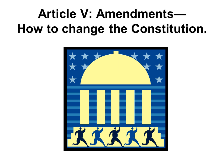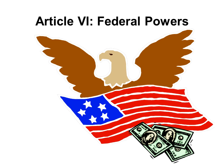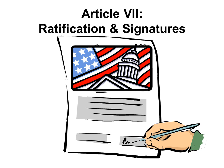Article V talks about the amendments and how to change the Constitution. Article VI talks about federal powers. For example, the federal government can print money. Article VII talked about the ratification of the Constitution and the people who signed it. The Constitution was ratified on September 17, 1787.